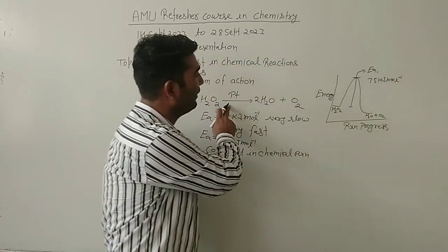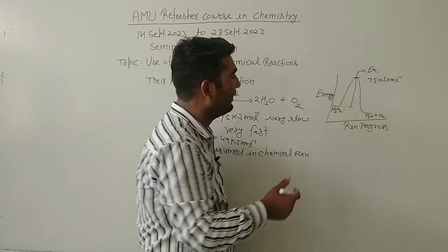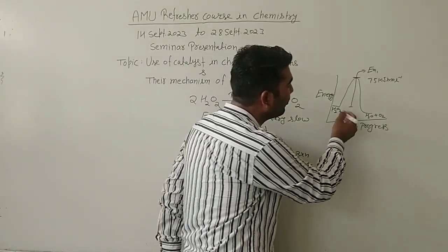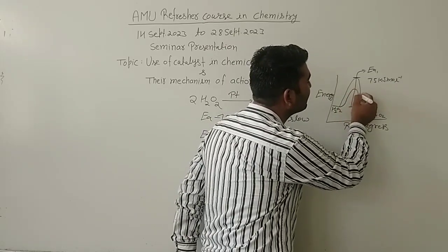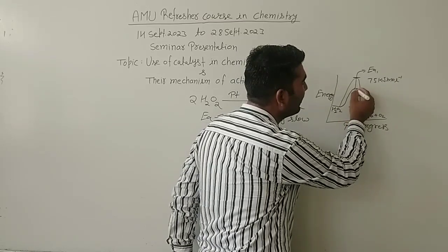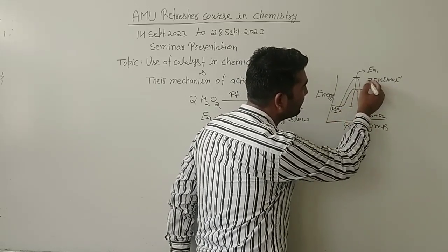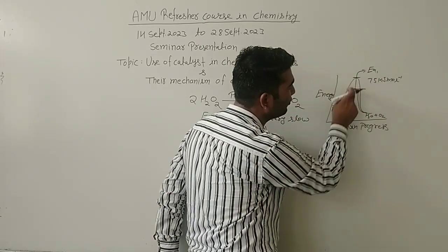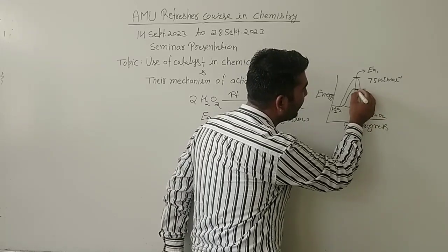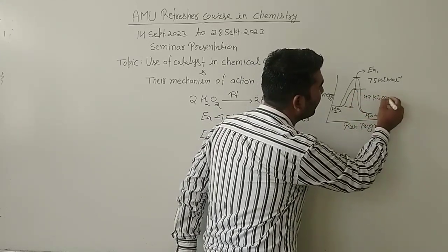But after adding the catalyst, that is platinum here, what does catalyst do? Catalyst provides this reaction an alternative pathway of less activation energy. After adding platinum, it decreases this activation energy that was initially 75 kilojoule to 49 kilojoule per mole.